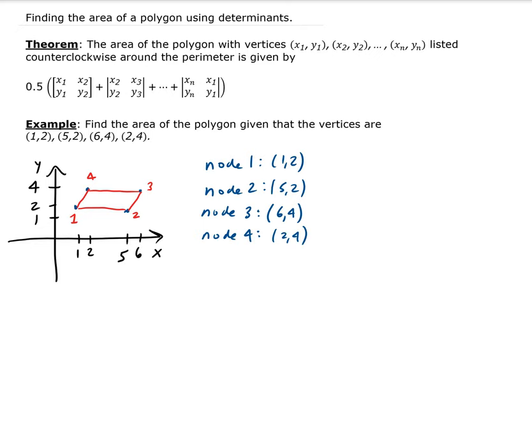So applying our theorem, the area is going to be 1/2. For each node, we're going to have a matrix, and we're going to calculate the determinant of each of those. The first one, we have 1, 2. And then the next vector, we have 5, 2. And then we put 6, 4.